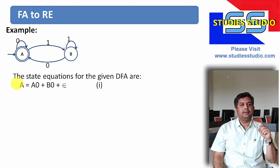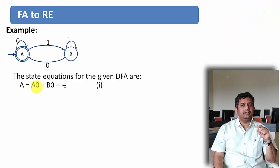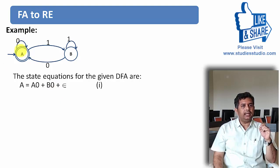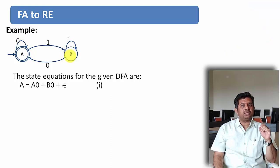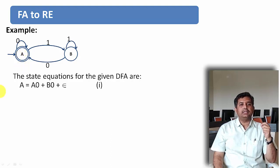The first equation is: A equal to A·0 plus B·0 plus epsilon. This means how can I reach state A? I can reach state A from state A on a 0 transition, and from state B on a 0 transition. You can verify — from state A to state A there is a loop on 0, and from state B to state A there is a transition. Since state A is the starting state, epsilon is added to it.